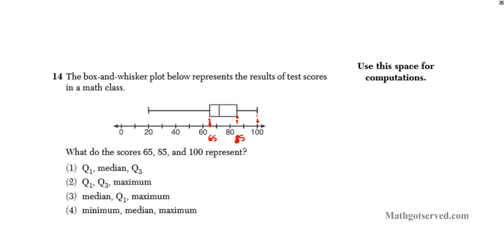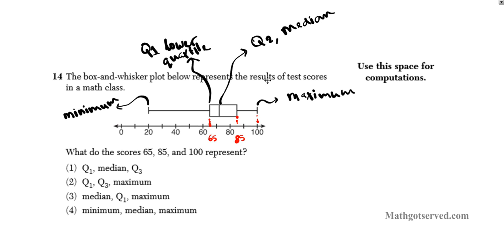Let's label what these respective portions are of a box and whisker plot. This line right here is known as your maximum. This line right here is known as your minimum. These three lines here are your quartiles. So this first piece is Q1, also known as your lower quartile. And then this one right here is known as Q2. Your Q2 is also your median. Keep that in mind.